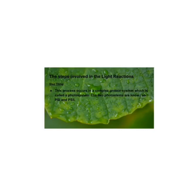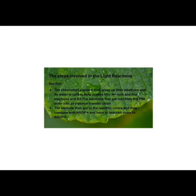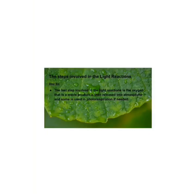The two photosystems are known as PSI and PSII. The chlorophyll pigment gives up its electrons and water is split to release four H-plus ions and four electrons, plus O2. The electrons lost from PSII enter into an electron transfer chain. They then reach the reaction center and combine with NADP-plus, reducing it to NADPH. The H-plus ions inside the lumen create a gradient, and H-plus ions combine with ADP to make ATP. The oxygen, considered a waste product, is released into the atmosphere, and some of it is used in photorespiration if needed.